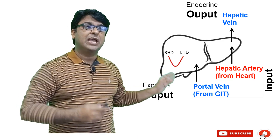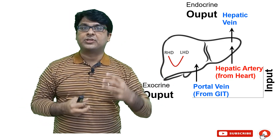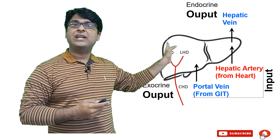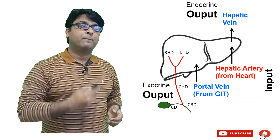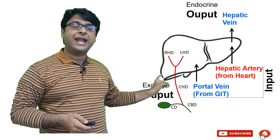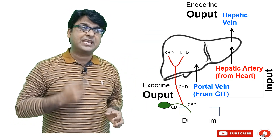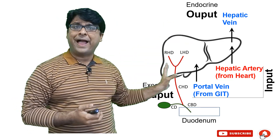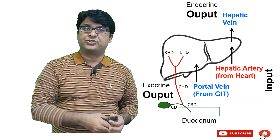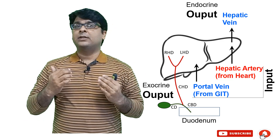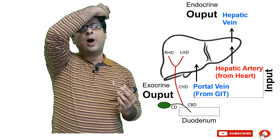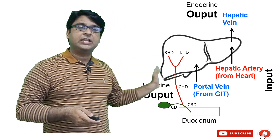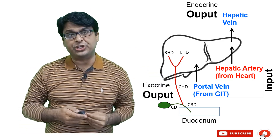The second output is the exocrine output, which is via the ducts. Whatever is synthesized within the liver gets into the right and left hepatic ducts, then enters the common hepatic duct, which is joined by the gallbladder cystic duct, forming the common bile duct, CBD. This common bile duct drains into the duodenum. So: two inputs — hepatic artery and portal vein — and two outputs — endocrine via hepatic vein, and exocrine via the ductular system draining into the duodenum.